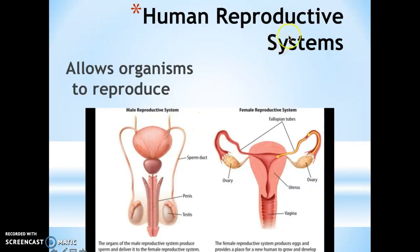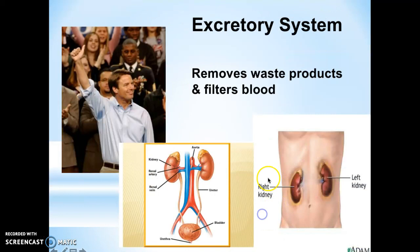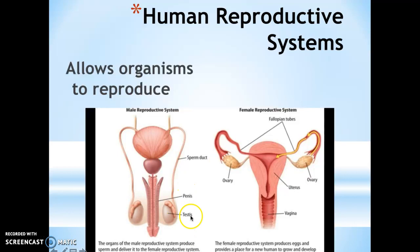The next body system is the reproductive system, and the function of the reproductive system is to allow organisms to reproduce. You have the male parts and the female parts: things like the testes where sperm is made, and then you have the ovaries where the eggs are made.